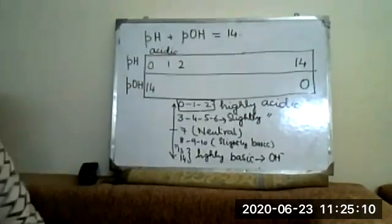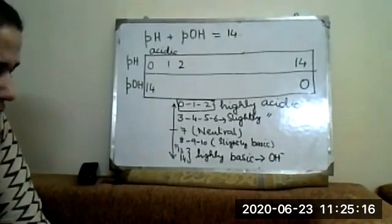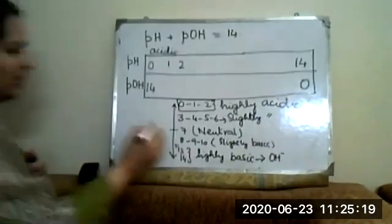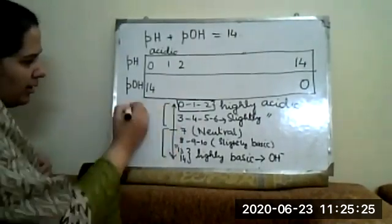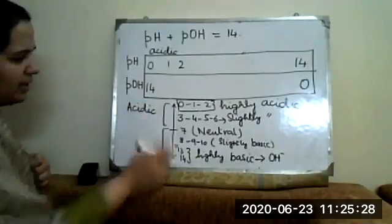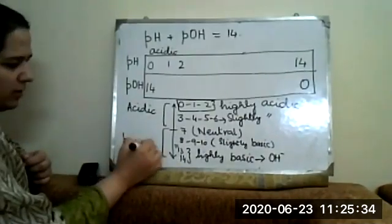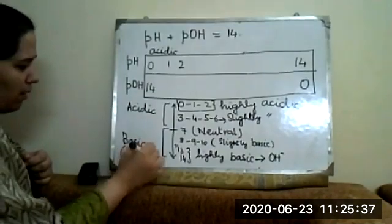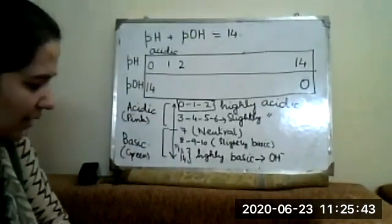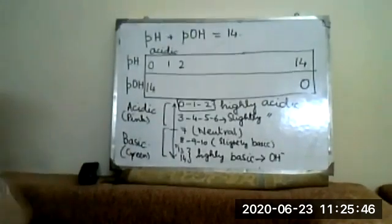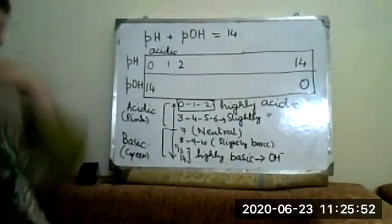There is a diagram on page 34 in your book. You can see it shows, in pink color, the acidic region with an arrow, and the basic character is shown in green color. The diagram shows the relationship between H⁺ and OH⁻ ions and also shows the pOH scale alongside the pH scale.